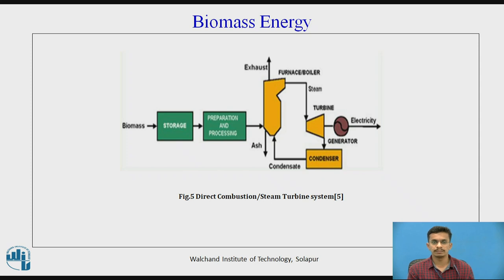This diagram shows the typical layout of a direct combustion or steam turbine system for biomass energy. The biomass is stored and then proceeded to the burning process. With the help of the heat produced by burning biomass, we heat water to convert it into high-pressure steam, which is then provided to the turbine to produce electricity. The condensed vapor is again used and reheated to again provide it to the turbines.